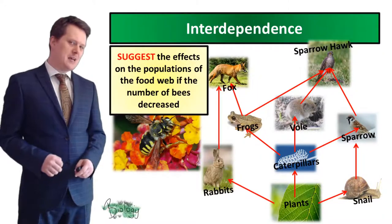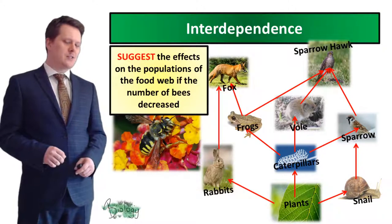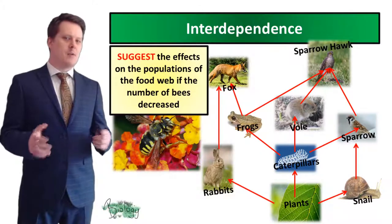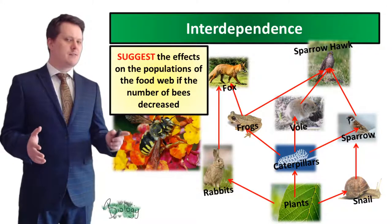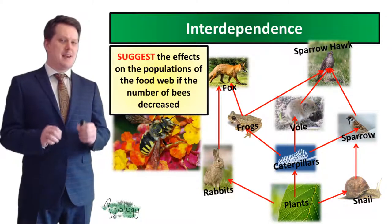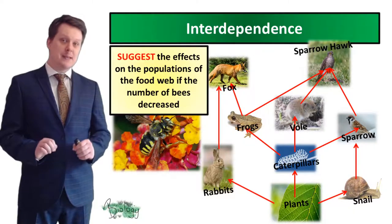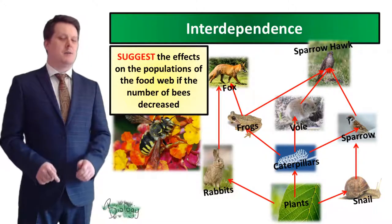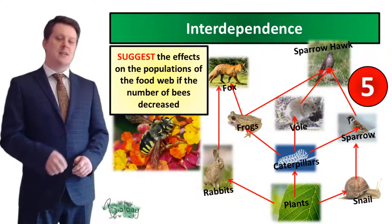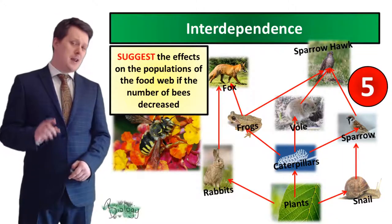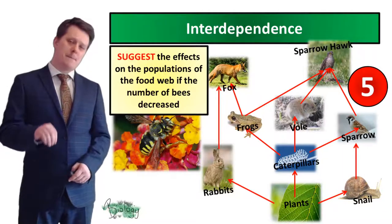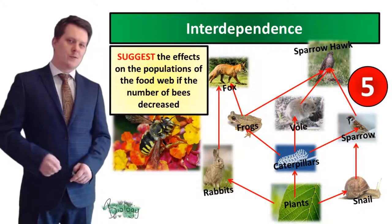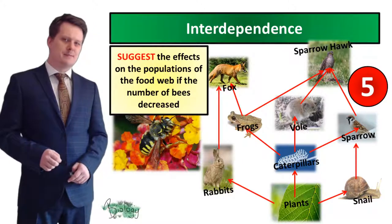For your next task, I'd like you to suggest the effects on the populations in this food web if the number of bees decreased. I'm going to put five seconds on the clock, and if you need more time pause the video. When you're finished we'll go through the answers together.